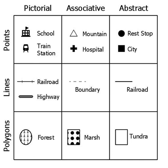A symbol is an energy-evoking and directing agent. Expanding on this definition, Campbell says: A symbol, like everything else, shows a double aspect. We must distinguish, therefore, between the sense and the meaning of the symbol. It seems perfectly clear that all the great and little symbolical systems of the past functioned simultaneously on three levels: the corporeal of waking consciousness, the spiritual of dream, and the ineffable of the absolutely unknowable.